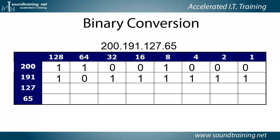This is the trick: any time you have consecutive 1's from least bit to greatest bit, the value is always 1 less than the next highest bit. For example, 1 plus 2 equals 3, which is 1 less than 4. 1 plus 2 plus 4 equals 7, which is 1 less than 8. Therefore, 1 plus 2 plus 4 plus 8 plus 16 plus 32 equals 63 — 1 less than 64.